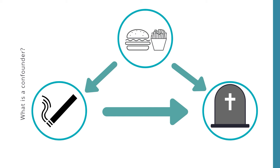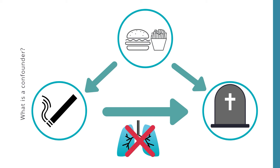For example, we know that smokers have an increased risk of getting lung cancer, and they might die as a result of that. So in fact, lung cancer is also associated with the exposure — which is smoking — but also with mortality. So you could say it's a confounder. But in this case, it lies in the causal pathway. And if you would adjust for a factor that lies in the causal pathway — something I will discuss in my next video — we would actually adjust away the effect of smoking. So in this example, lung cancer is not a confounder, but dietary habits are.